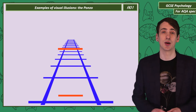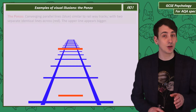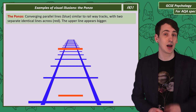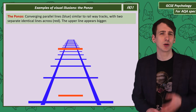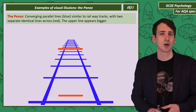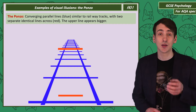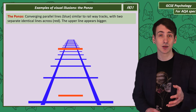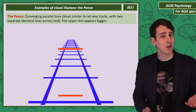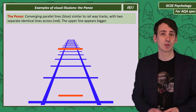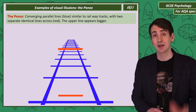The Ponzo illusion is a pair of converging parallel lines that look a little like a railway track. Both of the red lines are the same size, but the one at the top appears bigger. To show you, I'll move the top one down.